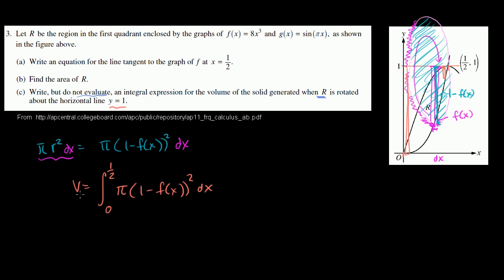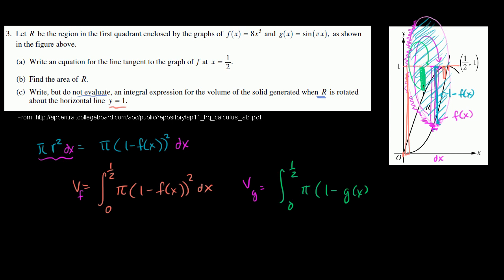By the same logic, we can figure out the volume if we take g(x) and rotate it around y equals 1, constructing disks like this. The volume of rotating g(x) around y equals 1 would be the integral from 0 to 1/2 of π times (1 − g(x))² dx, because 1 minus g(x) is each of those radii.